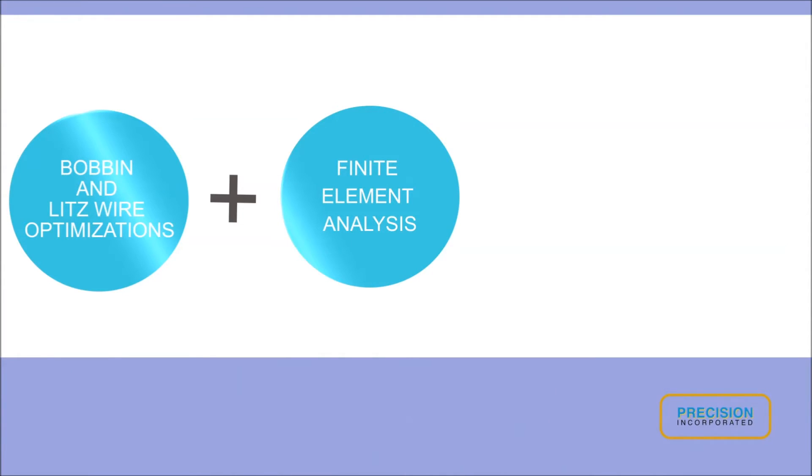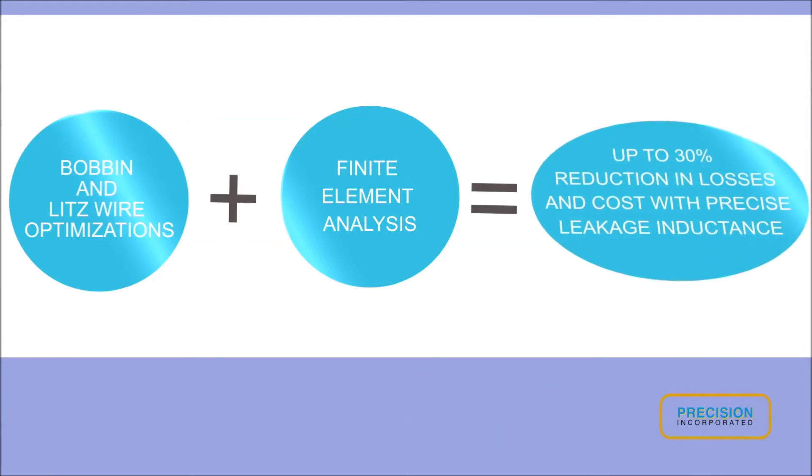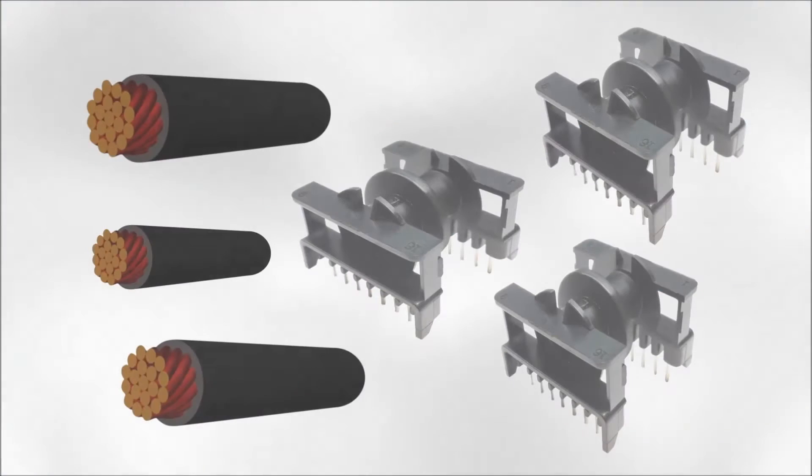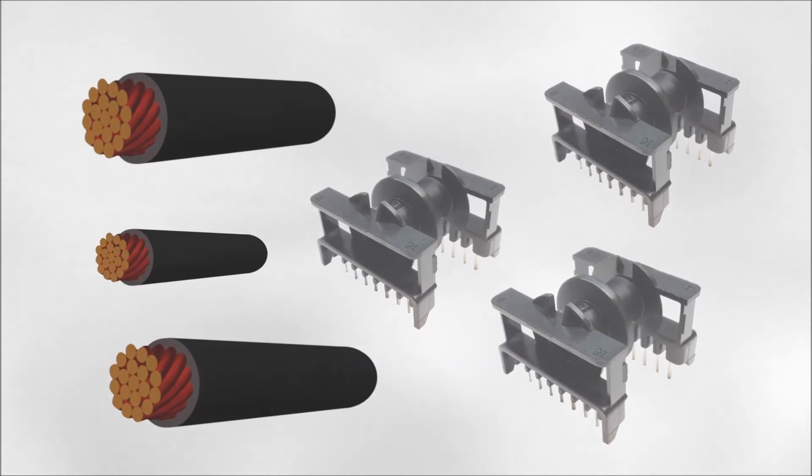Their expertise in this area can be applied to each unique application to reduce transformer losses and costs by as much as 30%. Precision's expert technical support is enhanced by the company's extensive stock of Litz wire and bobbins.